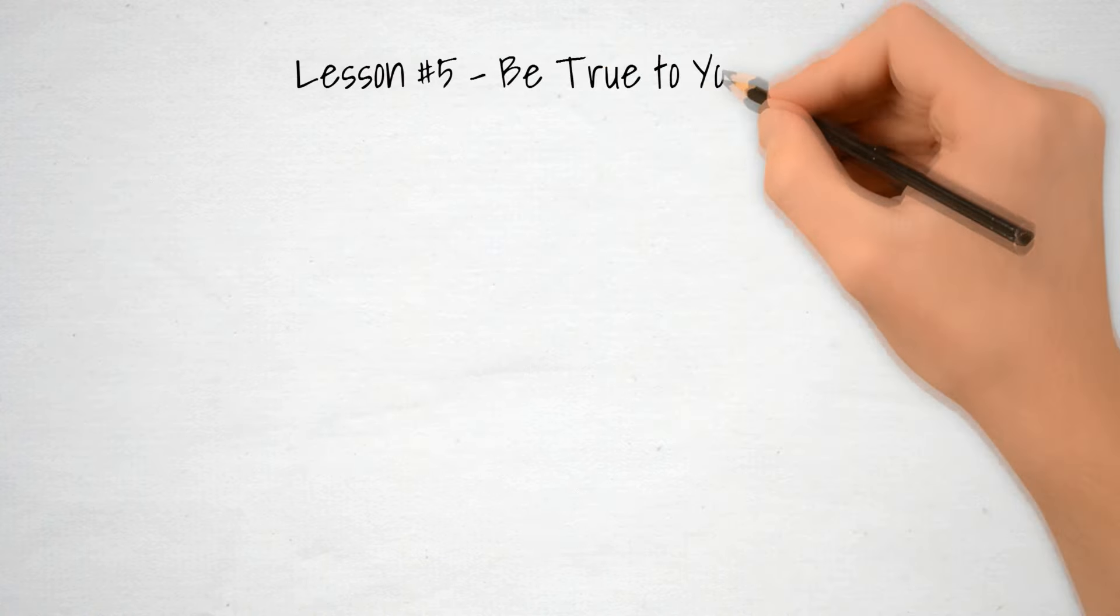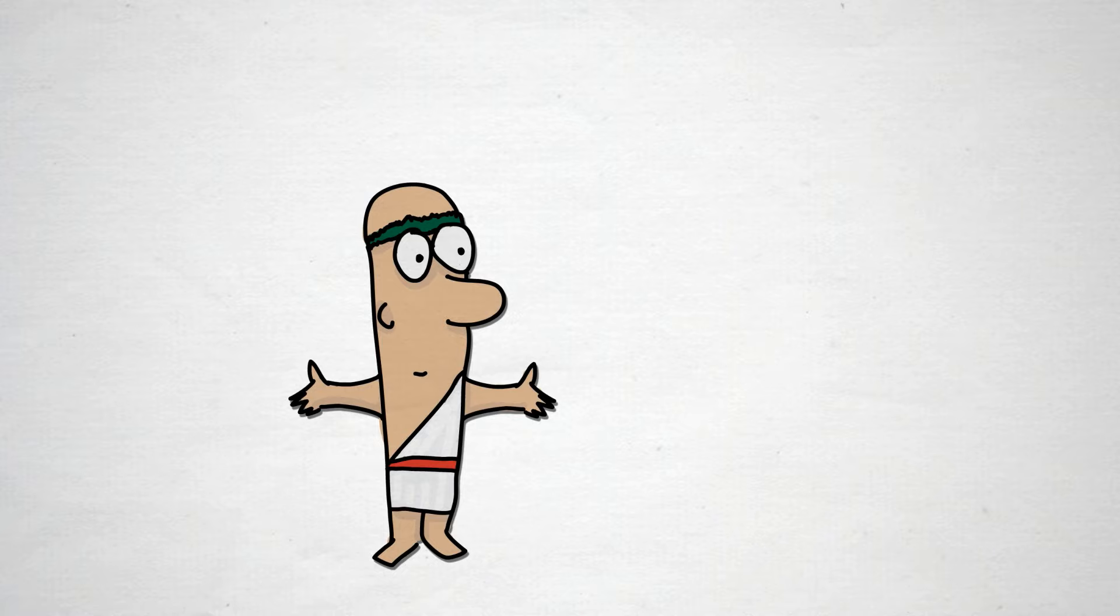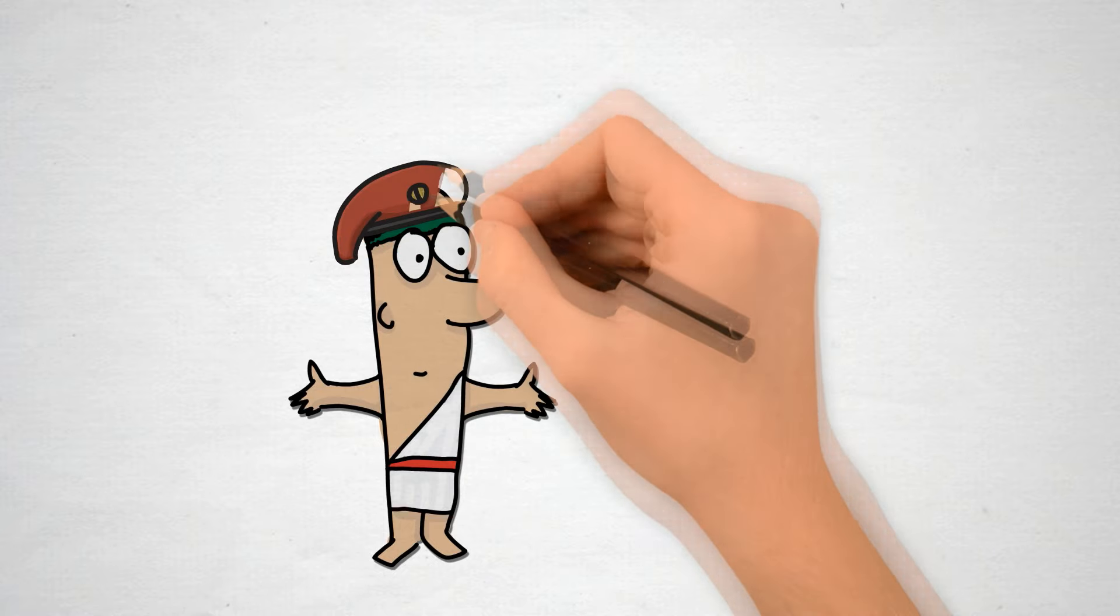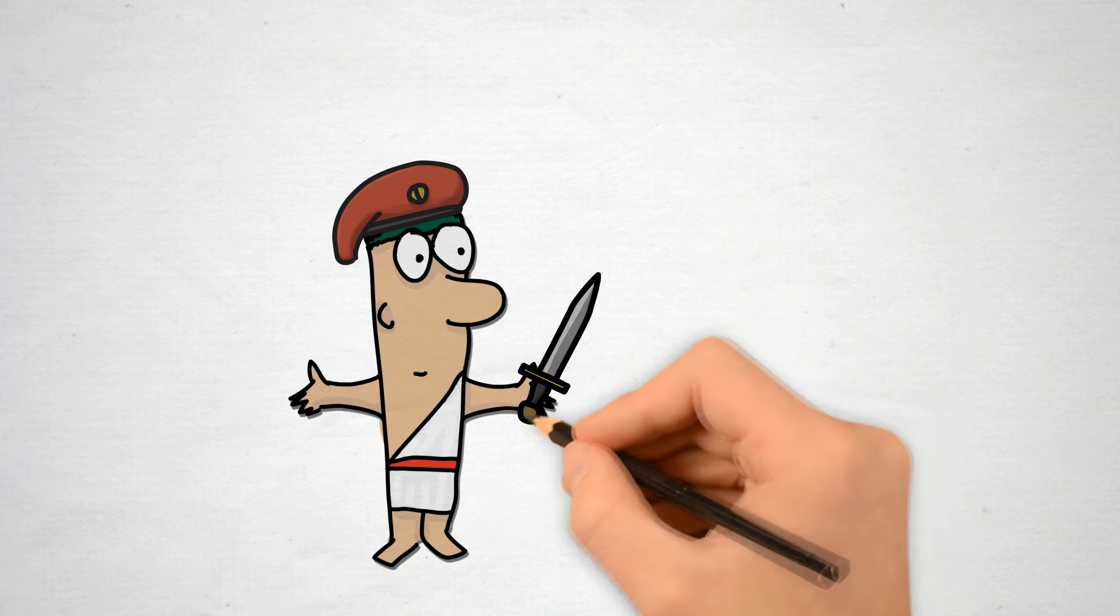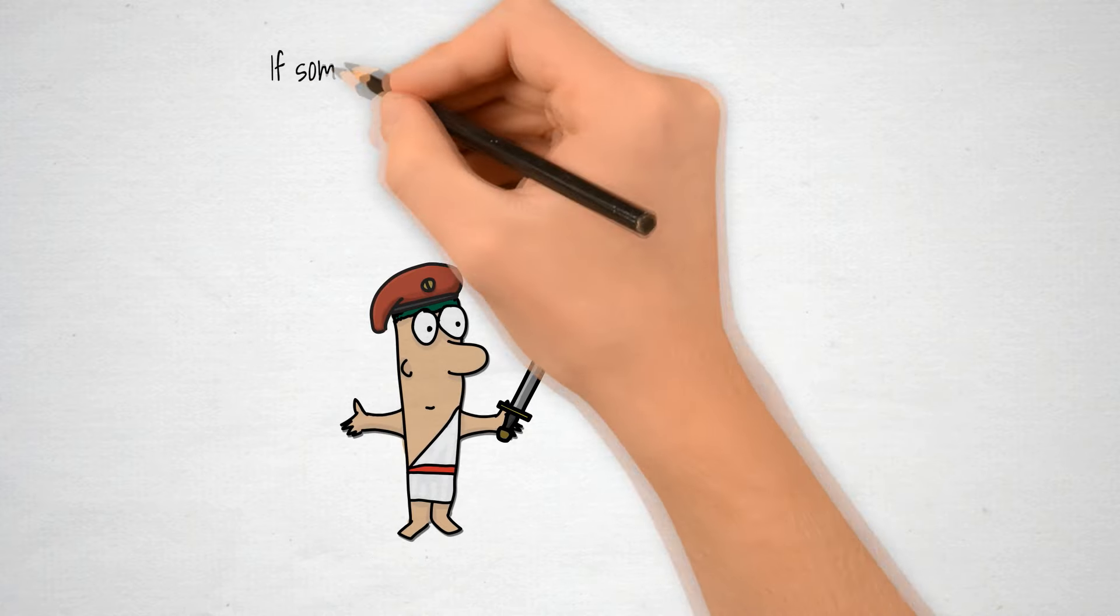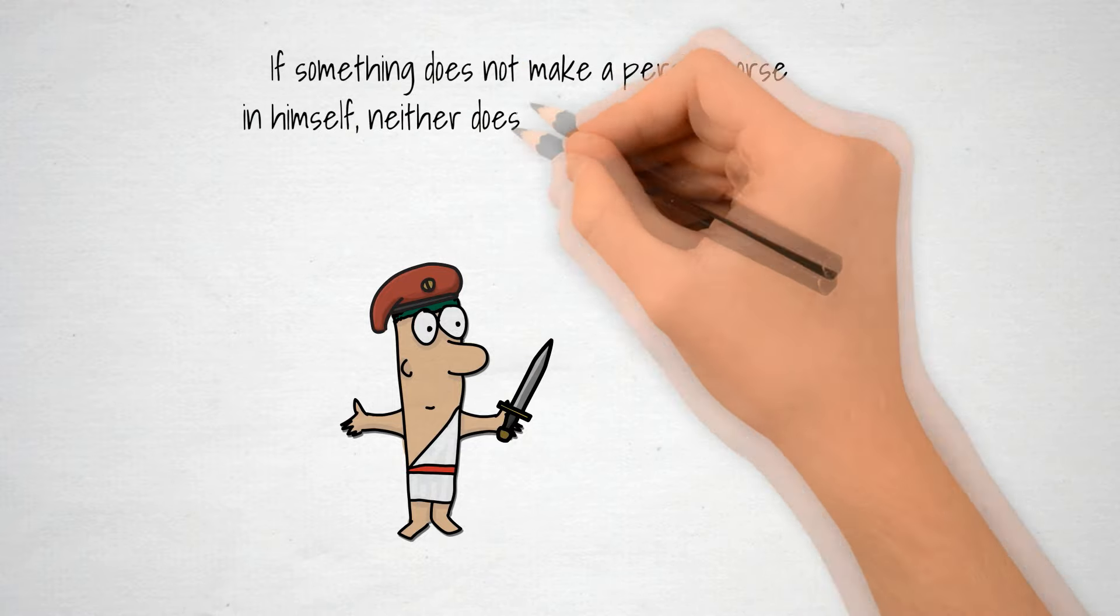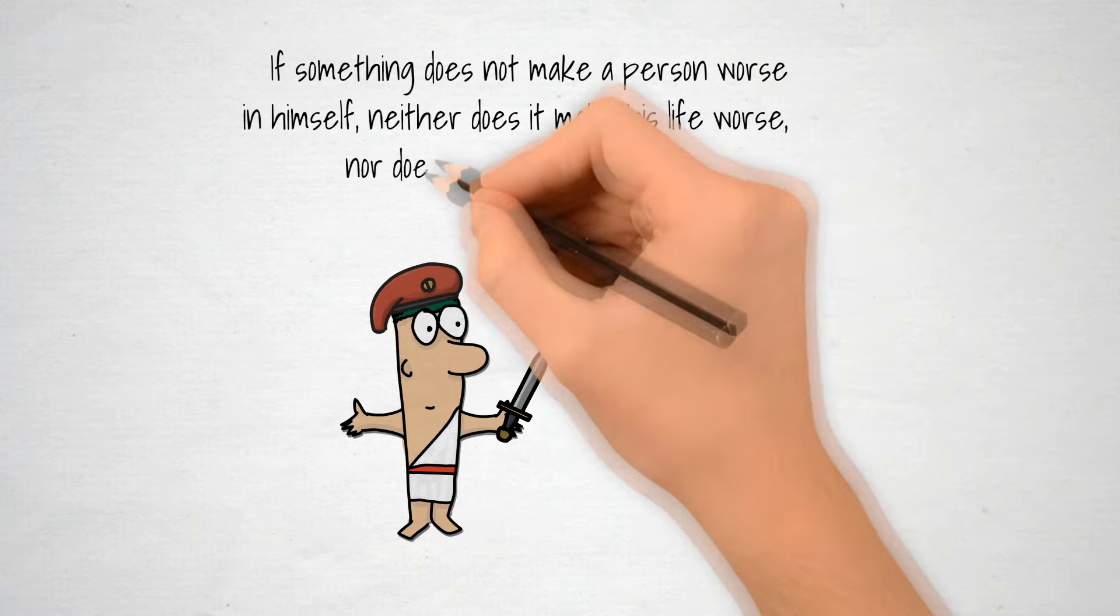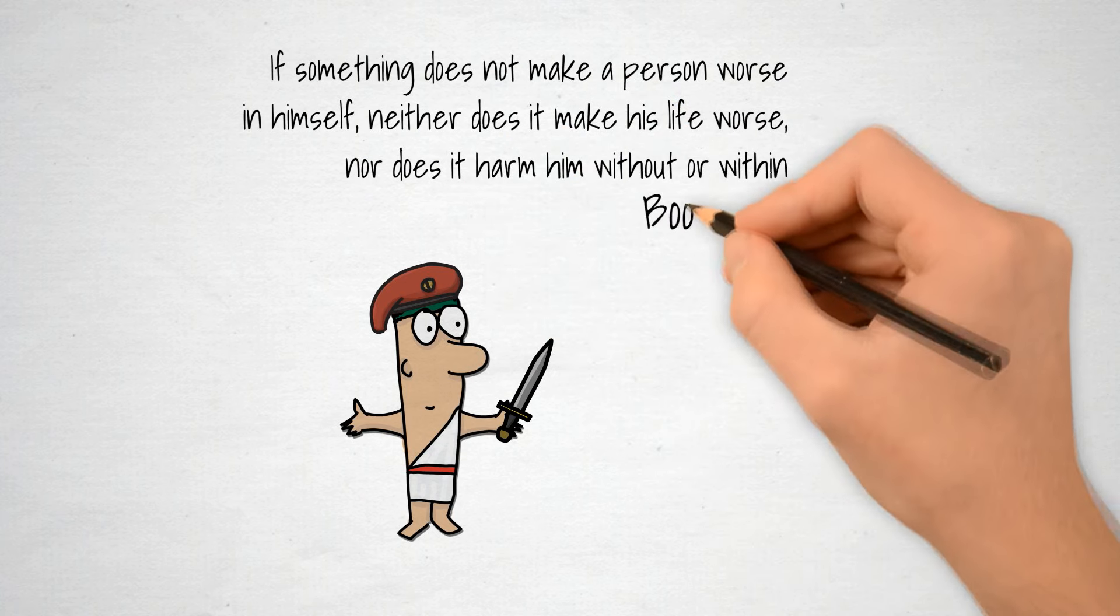Lesson 5: Be true to yourself. Marcus Aurelius states that the only real tragedy is not being true to yourself. What others think of you is of no importance, but how you act and how you think are the only things of intrinsic value. He ponders on the significance of adversity. If something does not make a person worse in himself, neither does it make his life worse, nor does it harm him without or within.